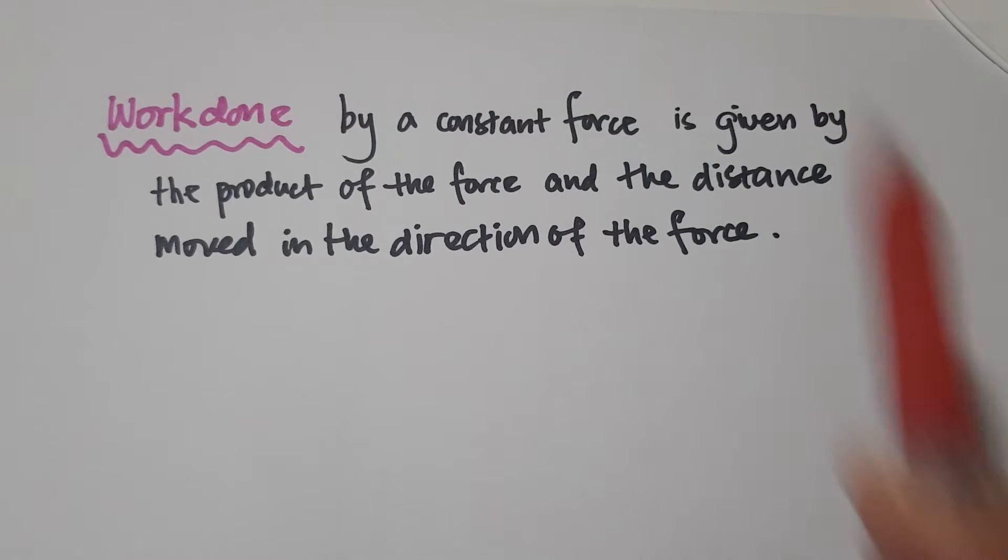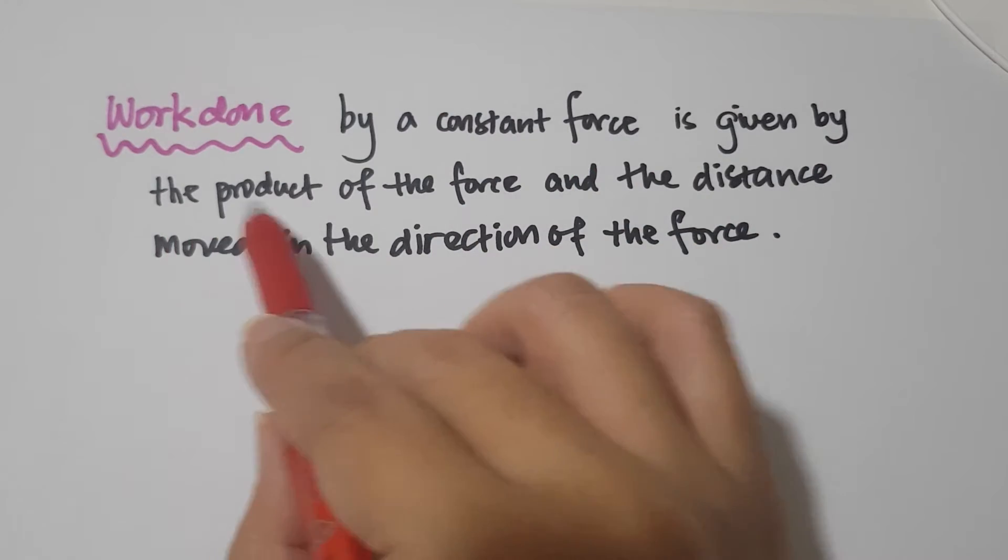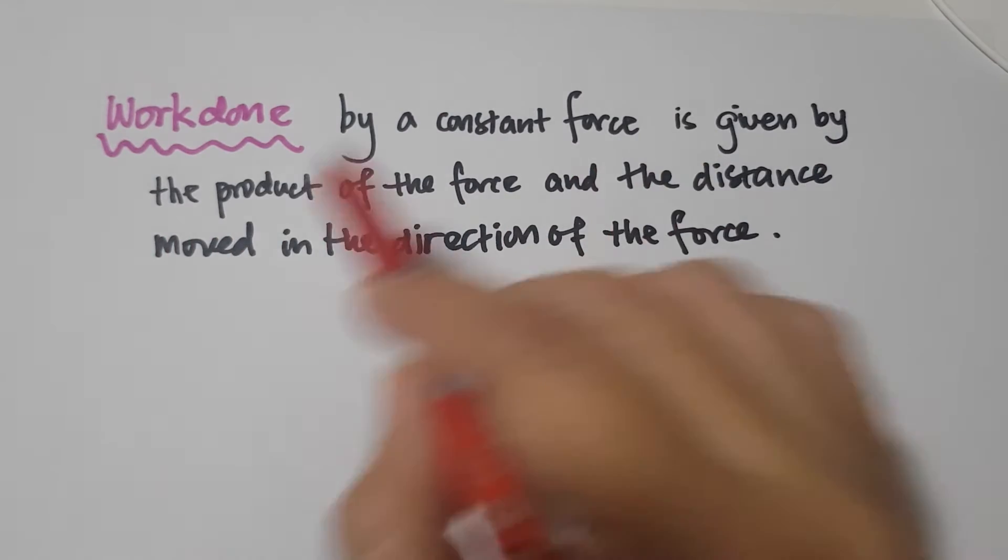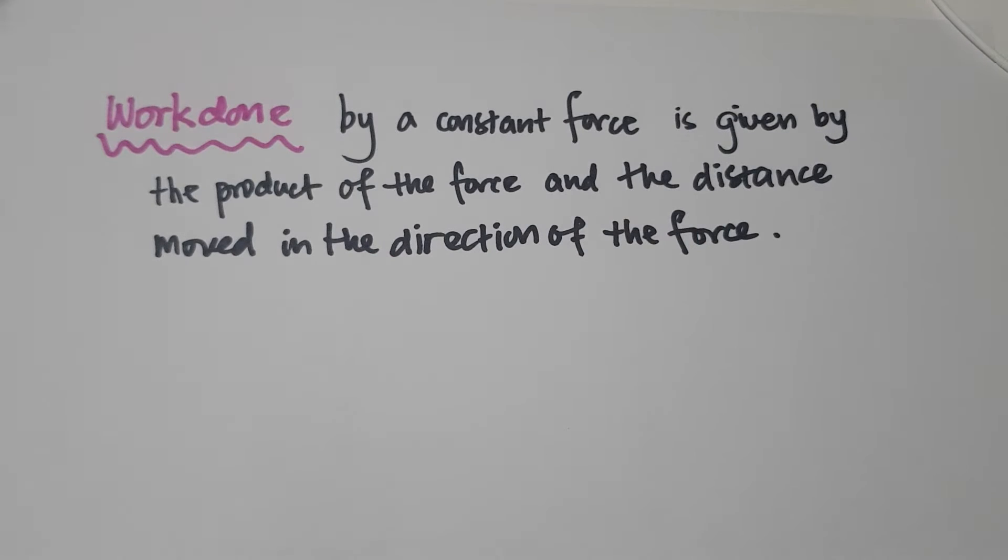Today we are going to look at work done. So work done by a constant force is given by the product of the force and the distance moved in the direction of the force. The key thing here you must remember, it must be moved in the direction of the force.